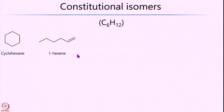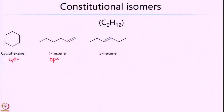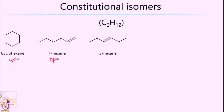Let us begin with constitutional isomers. We saw that cyclohexene and 1-hexene have the same empirical formula C6H12, but their chemical connectivity is completely different — cyclohexene is a cyclic molecule while 1-hexene is an open-chain system. As a consequence, their properties such as melting point, boiling point, and refractive index would also be different. You can also draw another isomer, 3-hexene, by simply moving the double bond from the first carbon to the middle carbon.